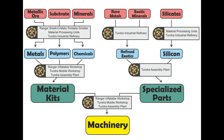The next chain we will be discussing is the chain producing machinery, and I promise this is the most complicated chain we will discuss today. Machinery is one of the high-end goods introduced by MKS, along with colony supplies, which follows an equally complicated path. But once we have the machinery chain established, colony supplies will be relatively easy to explain. To produce machinery you will need to mine all of the following resources: metallic ore, substrate, minerals, rare metals, exotic minerals, and silicates. In most cases you won't be able to mine all of that in one location, so you will need multiple bases.